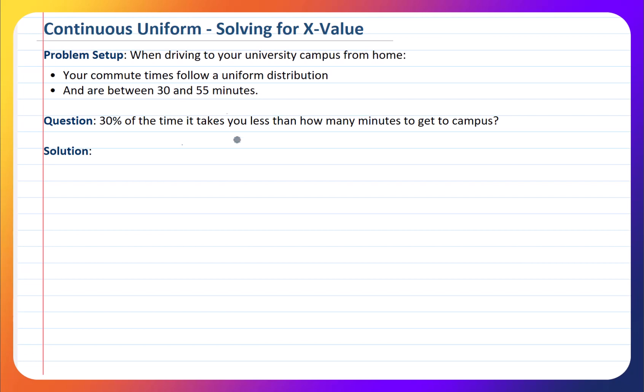In this example, we're given the probability of less than a certain amount. So let's go through it now. The problem setup: when driving to your university campus from home, your commute times follow a uniform distribution and are between 30 and 55 minutes. Question: 30% of the time, it takes you less than how many minutes to get to campus?